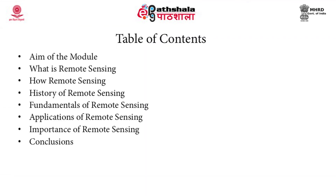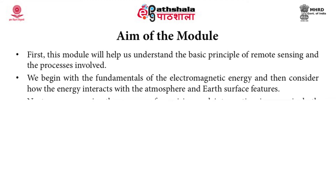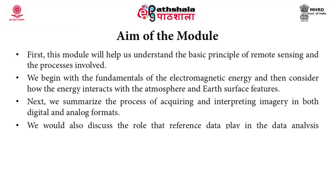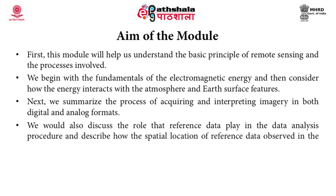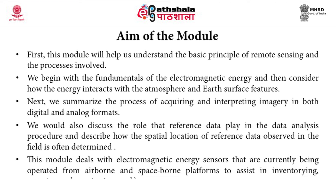The aim of the module is to help us understand the basic principle of remote sensing and the processes involved. We will begin with the fundamentals of electromagnetic energy and then consider how the energy interacts with the atmosphere and Earth's surface features. Next we will summarize the process of acquiring and interpreting imagery in both digital and analog formats. We will also discuss the role that reference data plays in data analysis and describe how the spatial location of reference data observed in the field is determined. This module deals with electromagnetic energy sensors currently being operated from airborne and spaceborne platforms to assist in inventorying, mapping and monitoring Earth's resources.